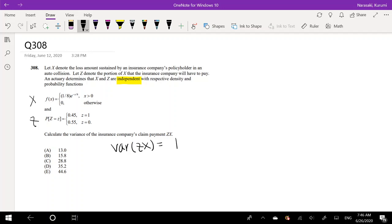This is equal to the second moment of ZX minus the expectation of ZX, the whole thing squared. Because they are independent, we can split this up and say this equals the second moment of Z times the second moment of X.